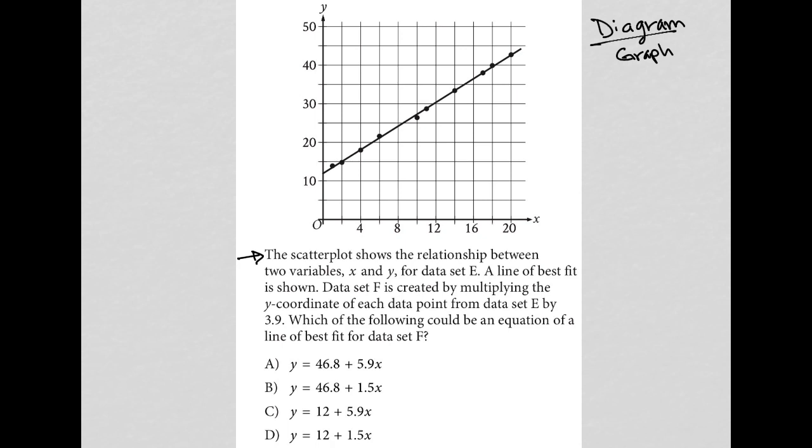Data set F. Now we're introducing a different data set, so I'm just going to label this line as E. This is the information for data set E. So what do we know about data set F? The question says data set F is created by multiplying the Y coordinate of each data point from data set E by 3.9. So we would take every single one of these points and multiply them by 3.9, which would shift up this graph.